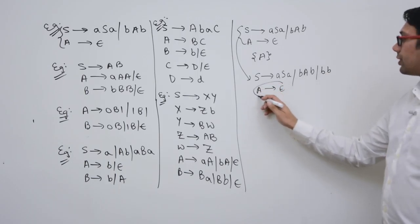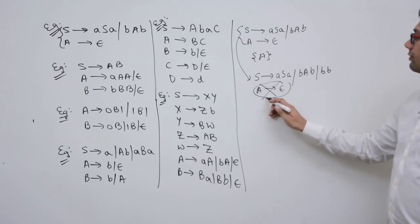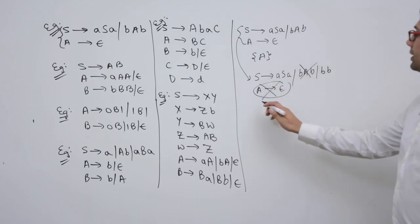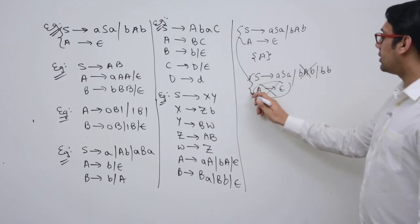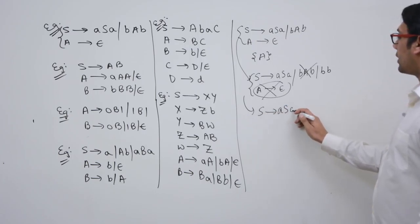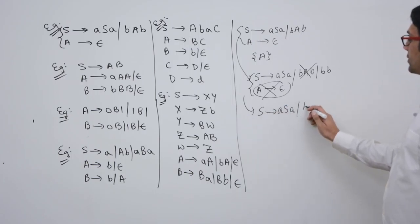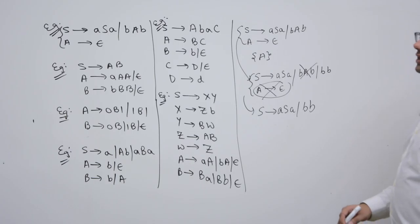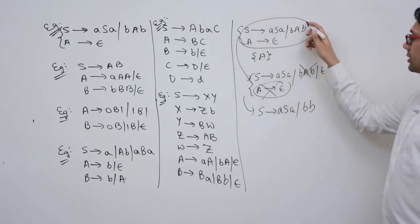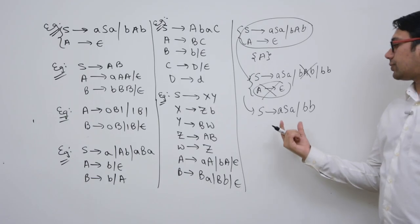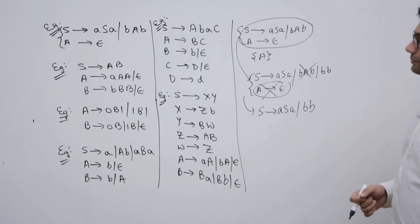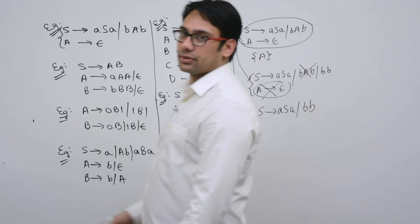Now remove the epsilon production. Wherever we have A, we remove it. So this complete grammar can be represented as: S derives a S a | b b. That means the complete grammar is represented by only this production: S derives a S a | b b.